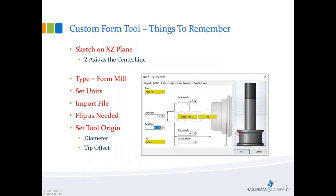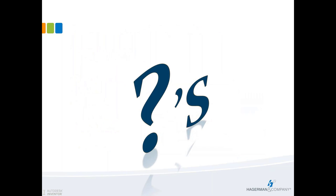Custom form tools — things to remember: sketch on the XZ plane with Z as the centerline. The shape can be anything you want to draw. When creating the tool, designate it as a Form Mill, set your units, import the file, flip it as needed, and change the contact point by adjusting the diameter and tip offset. Once you fill in that one page, you're done — start machining with it.